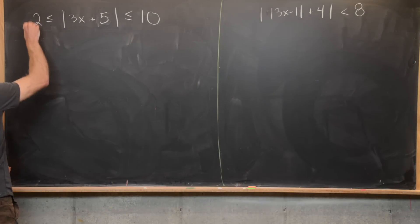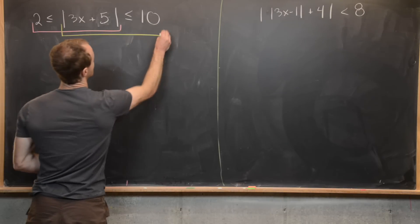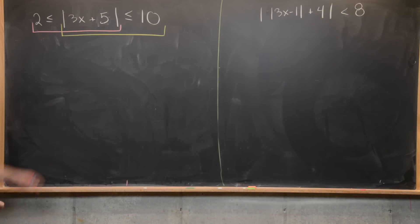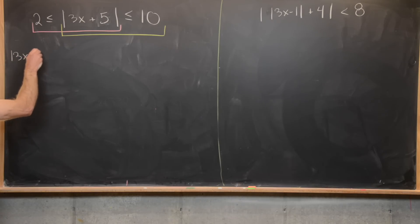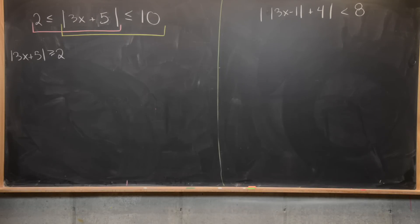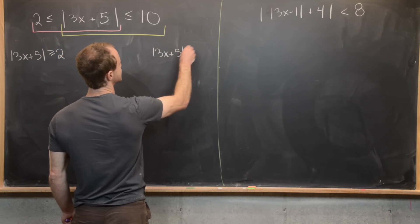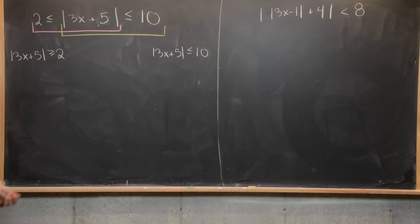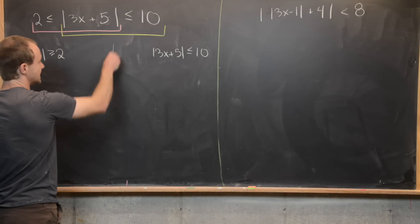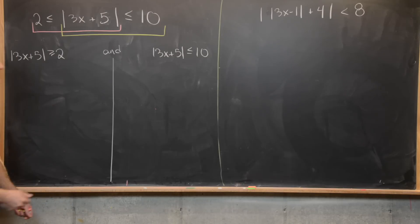I'm going to underline this left one in pink and this right one in yellow, and we'll need to work each of those individually. The pink one can be rewritten as: the absolute value of 3x plus 5 is bigger than or equal to 2 — I just changed the order there. The yellow one can be rewritten as: the absolute value of 3x plus 5 is less than or equal to 10. We'll calculate each separately, keeping in mind we have an AND statement between them.